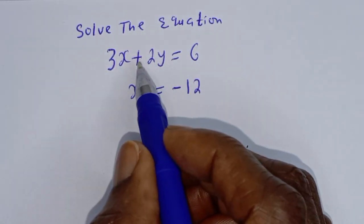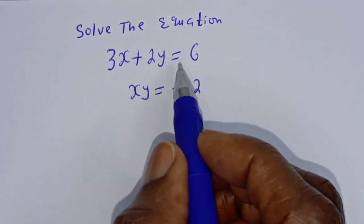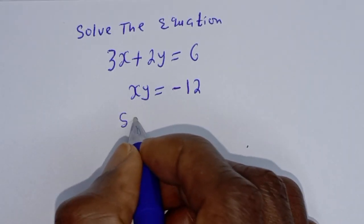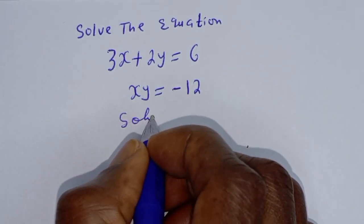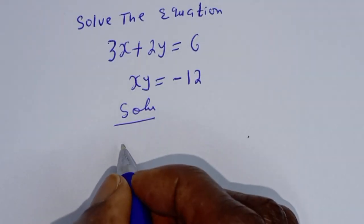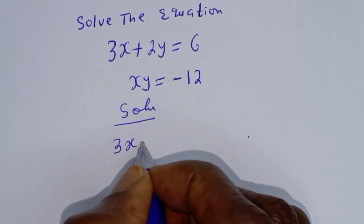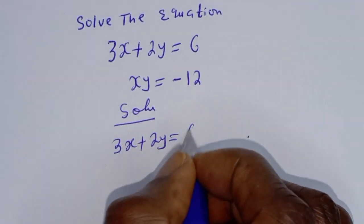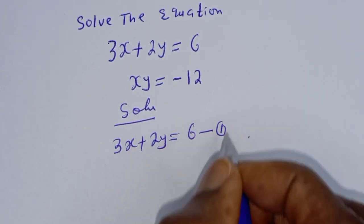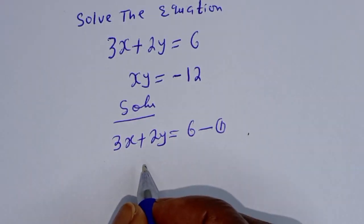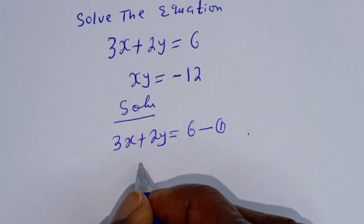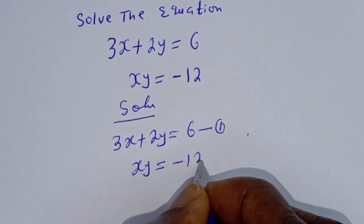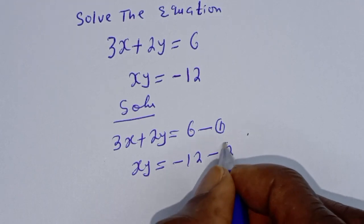Solve the equation: 3x + 2y = 6, call this equation 1, and xy = -12, call this equation 2.